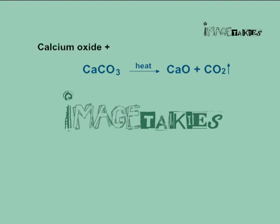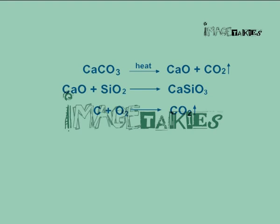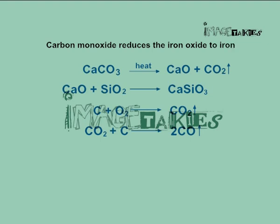1. Calcium oxide reacts with silica to form calcium silicate: CaO + SiO₂ → CaSiO₃. 2. Coke reacts with oxygen present in the air to form carbon dioxide: C + O₂ → CO₂. 3. Carbon dioxide reacts with more coke to produce carbon monoxide: CO₂ + C → 2CO. 4. Carbon monoxide reduces the iron oxide to iron: Fe₂O₃ + 3CO → 2Fe + 3CO₂.